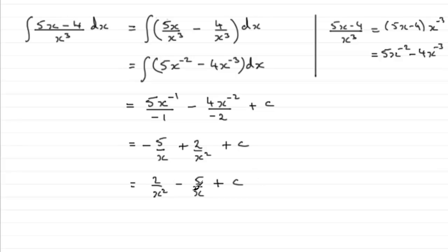Or you could put it over a lowest common multiple of x² and x, which would be x². If you did that then you could put your x² there and you're going to have 2 minus, and then you've got to multiply top and bottom here by an x to put it over x², so that's going to be minus 5x.